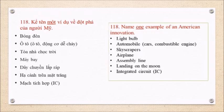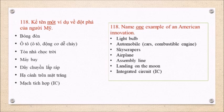Question 118: Name one example of an American innovation. Light bulb. Automobile. Combustible engine. Skyscrapers. Airplane. Assembly line. Landing on the moon. Integrated circuit.